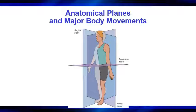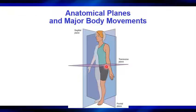Looking at this in general, the individual in this picture is in an anatomical position — standing, arms down at the sides, palms facing forward. We then have the reference points for the anatomical planes. The sagittal plane cuts the body into right and left halves. The frontal plane cuts the body into front and back. The transverse plane cuts the body into upper and lower sections.